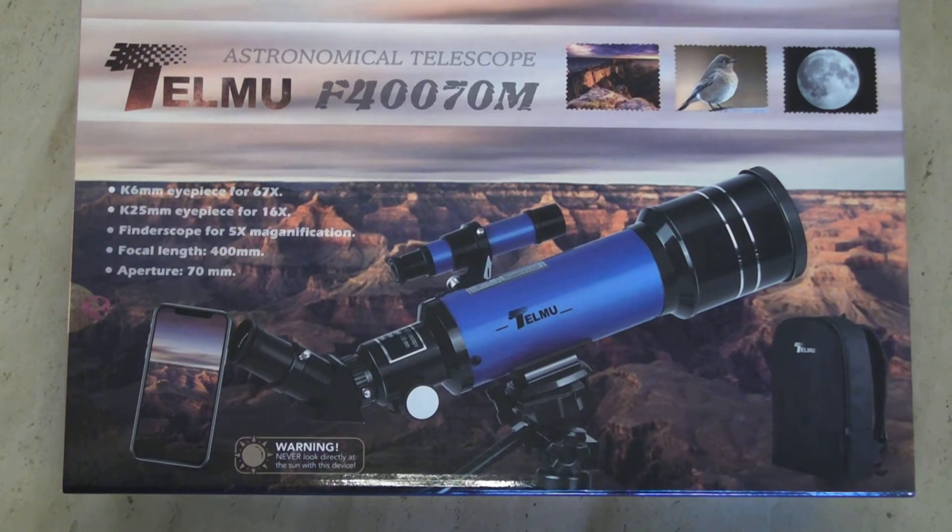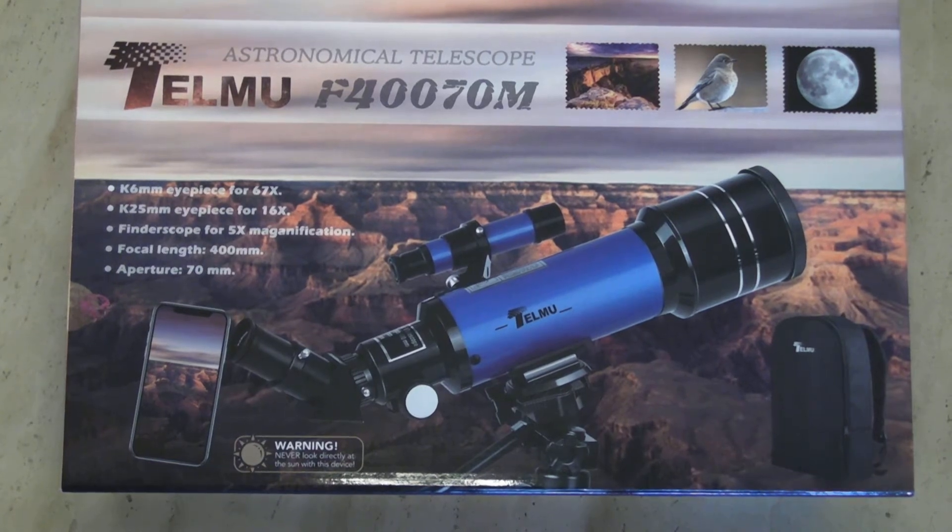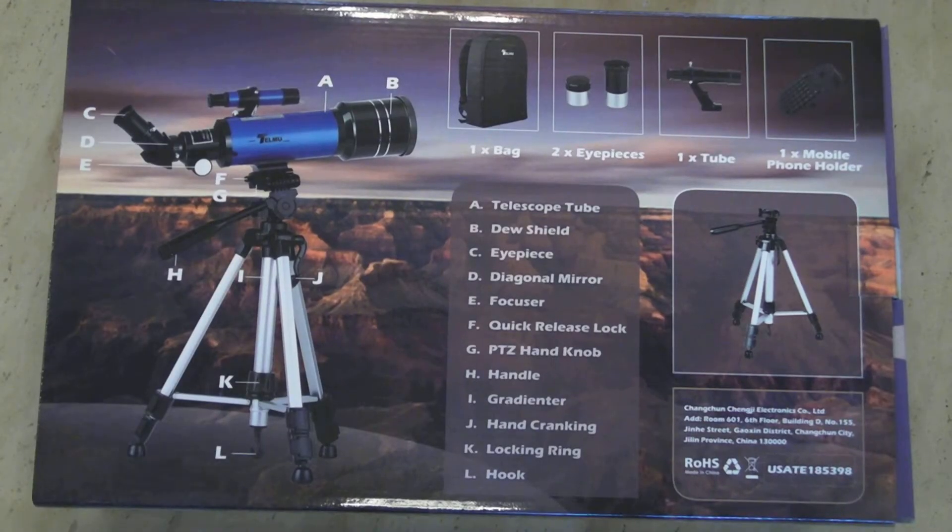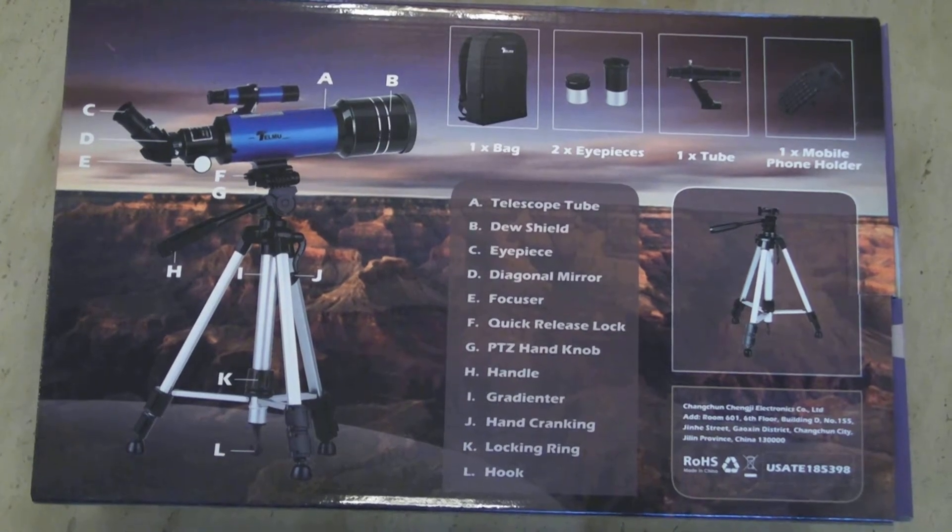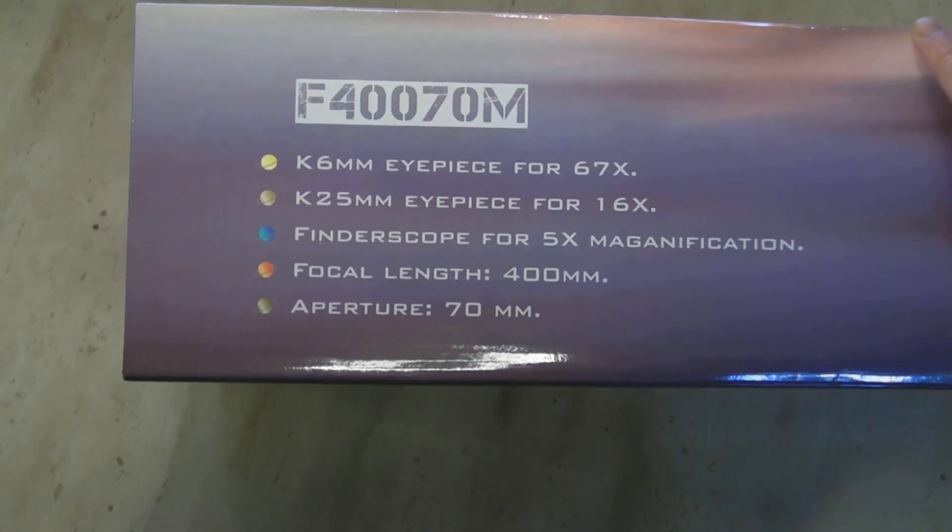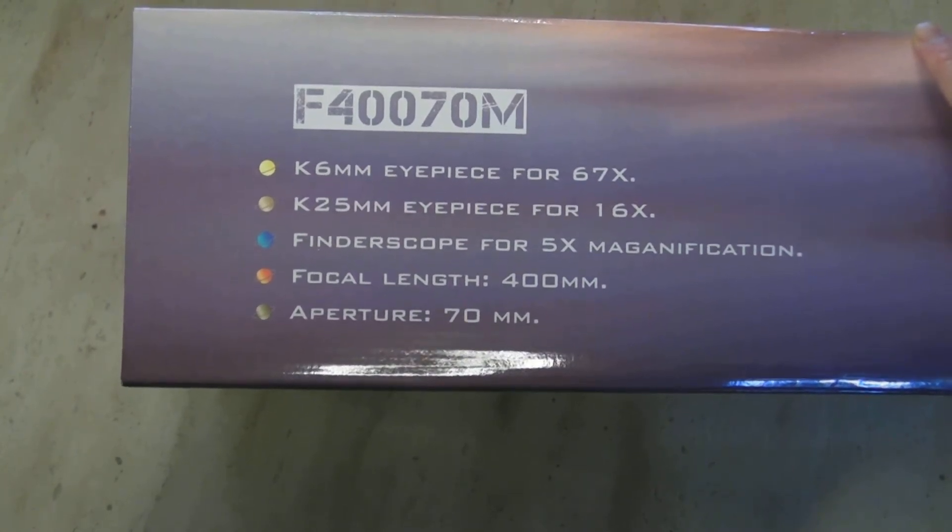Today we are going to review a telescope that attaches to your cell phone to take pictures. This is the Telmu F40070M. Here's the front of the box and here's the rear of the box. And here are the specs of the telescope.